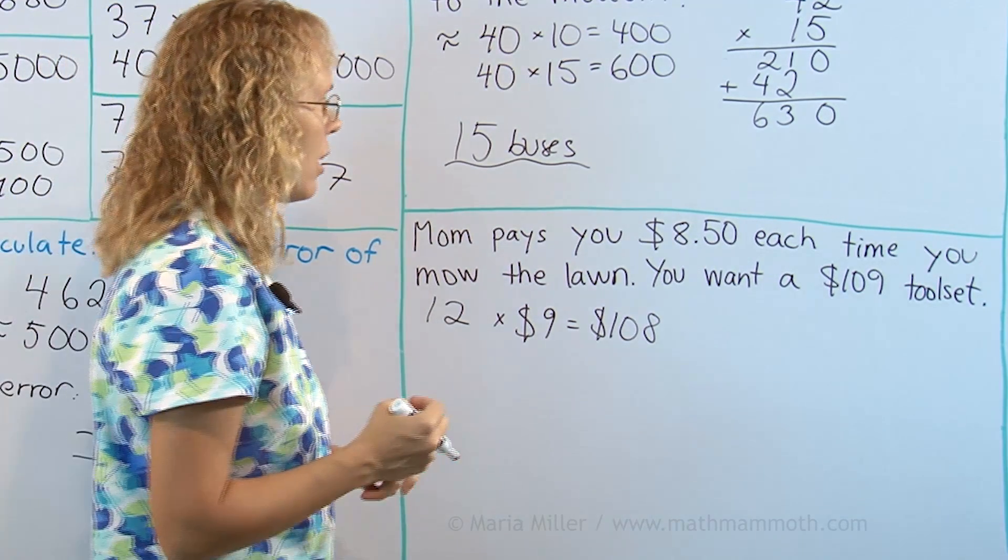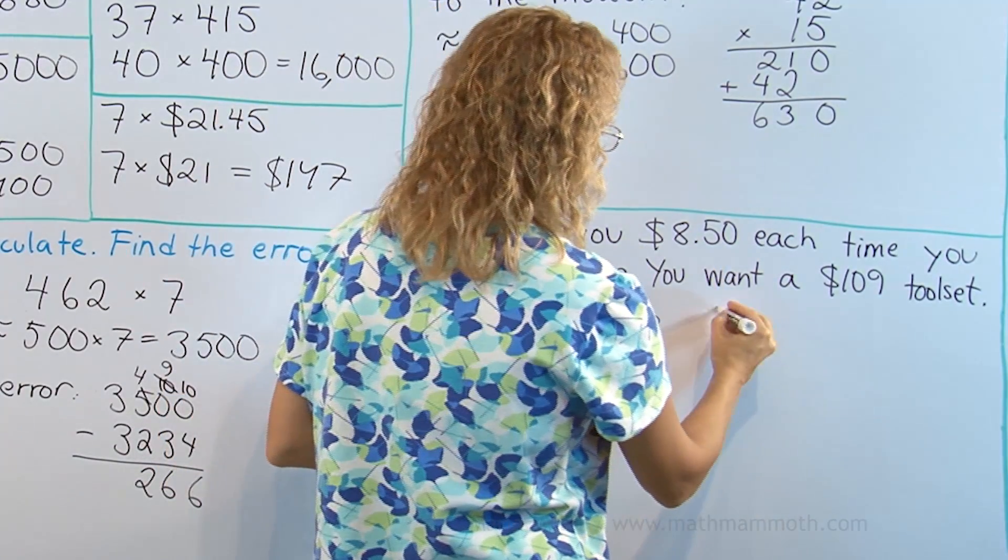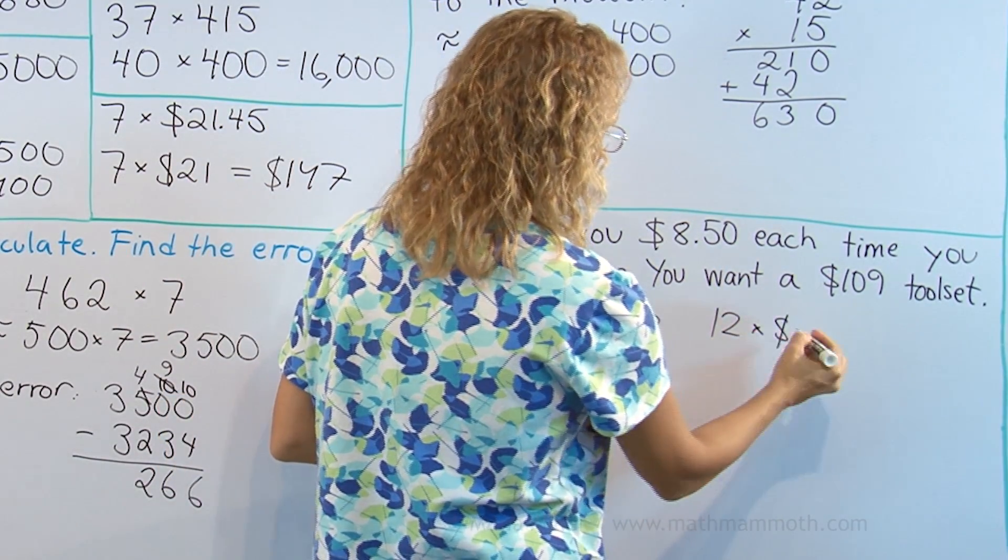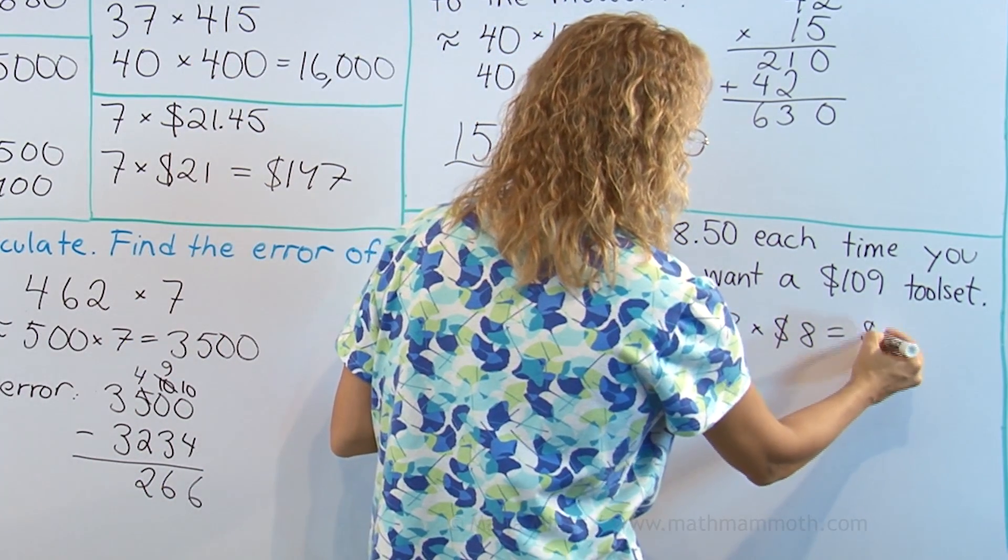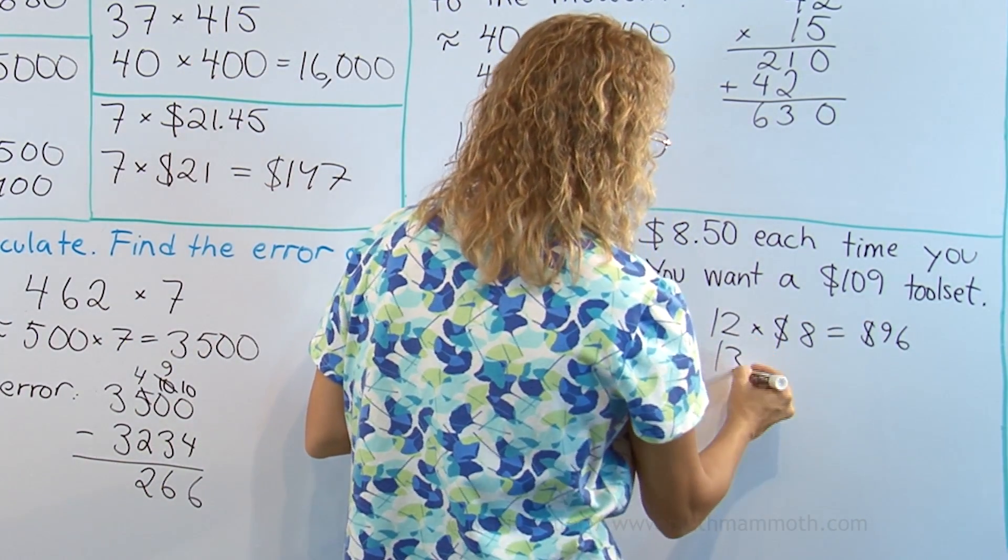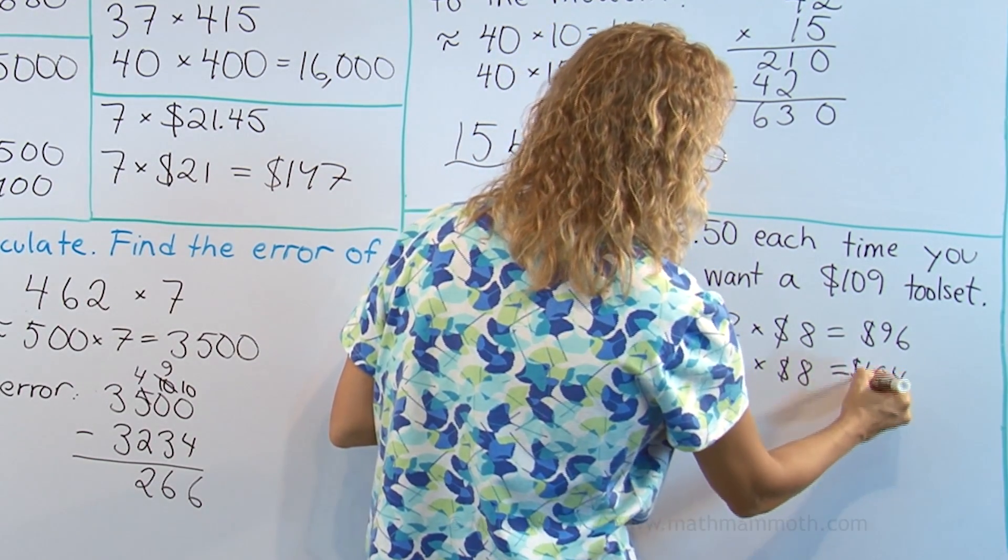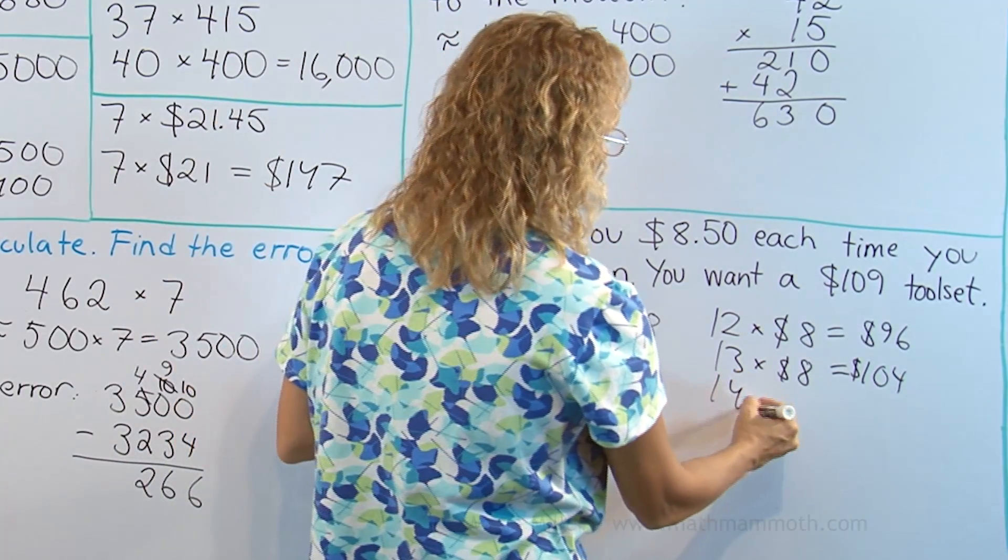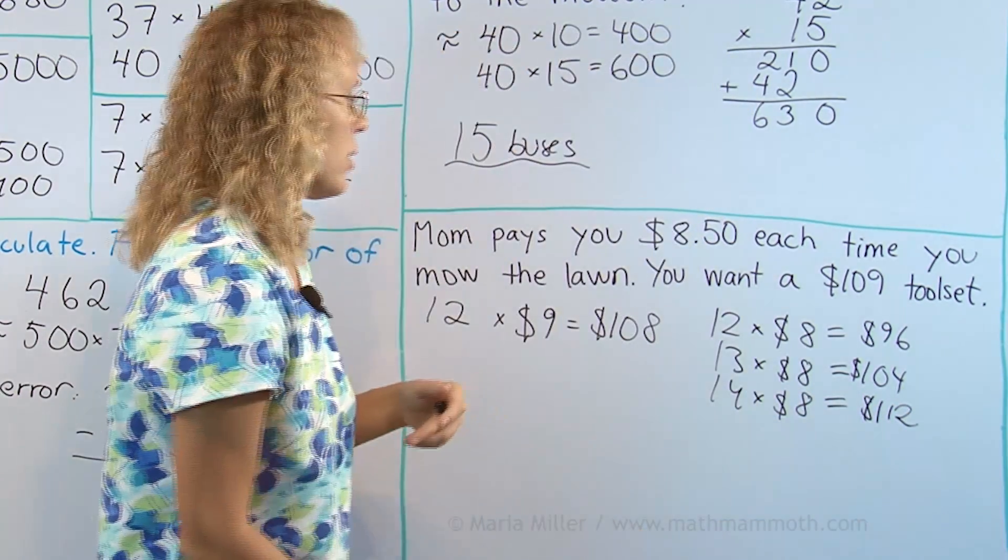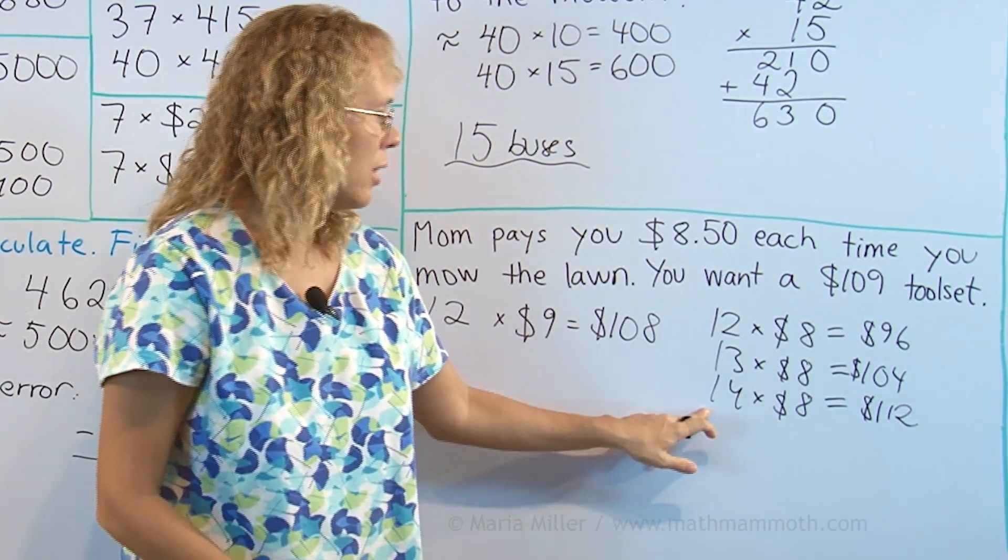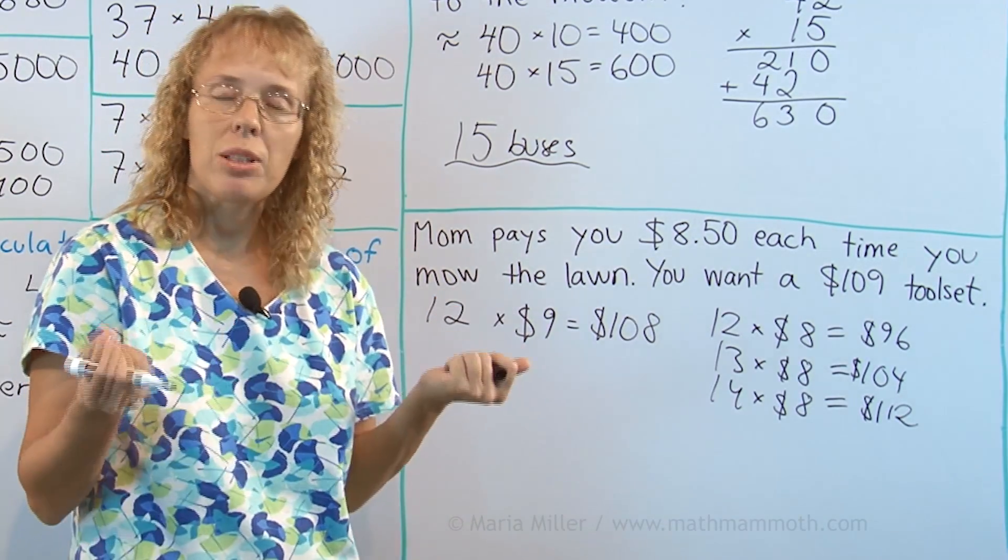You can also look at rounding this down to $8. Because $8.50 is exactly midway between $8 and $9. So 12 times 8 would be 96. 13 times 8 would be 104. And 14 times 8 then 112. So 14 times would be enough if it was $8 that you were earning. And here 13 times. So let's make a guess it's going to be 13 times.